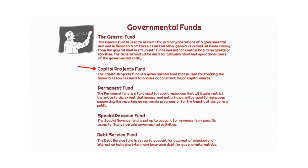Capital project funds are going to be used for tracking financial sources that are going to be used to acquire and/or construct a major capital asset. A major capital asset could be something like a highway, a railway, or any sort of dams that need to be built by the government. The construction of these projects are all going to come out of the capital projects fund. Subways, which are popular in New York, are examples of things that could be financed from the capital projects fund.